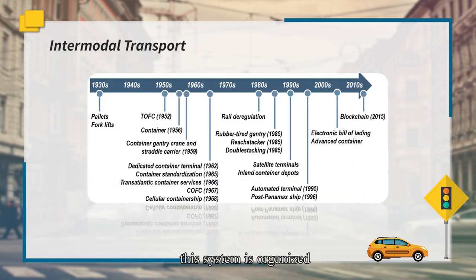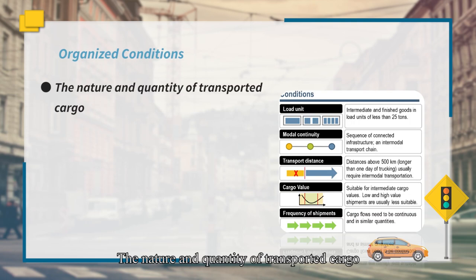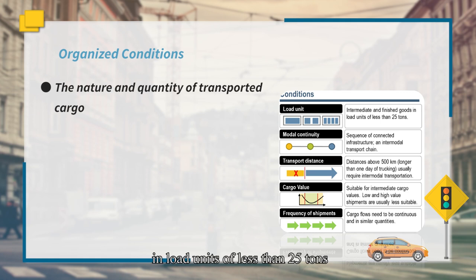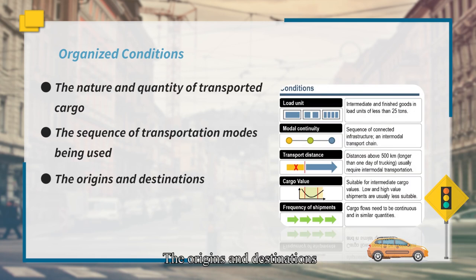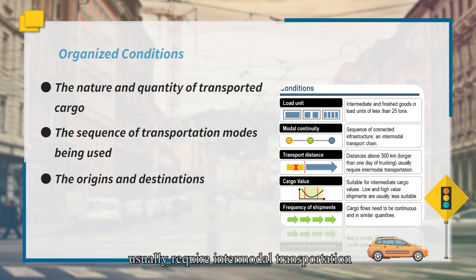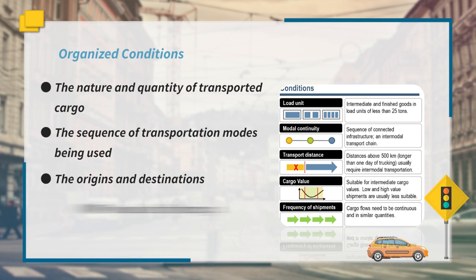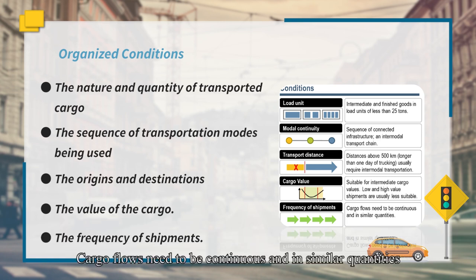As shown in the figure, the intermodal transportation system is organized as follows. The nature and quantity of transport cargo: intermodal transportation is usually suitable for intermediate and finished goods in load units less than 25 days. The sequence of transportation modes used — the dominant modes are trucking, rail, barge, and maritime. The origins and destinations distance above 500 kilometers usually requires intermodal transportation. The value of the cargo is suitable for intermediate cargo values. The frequency of shipments: cargo flows need to be continuous and in similar quantities.